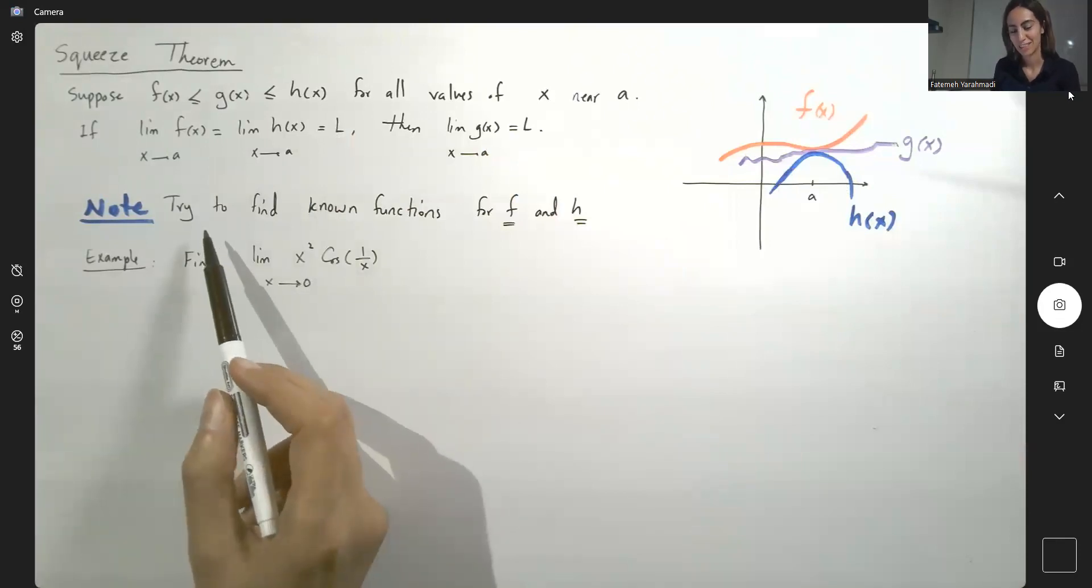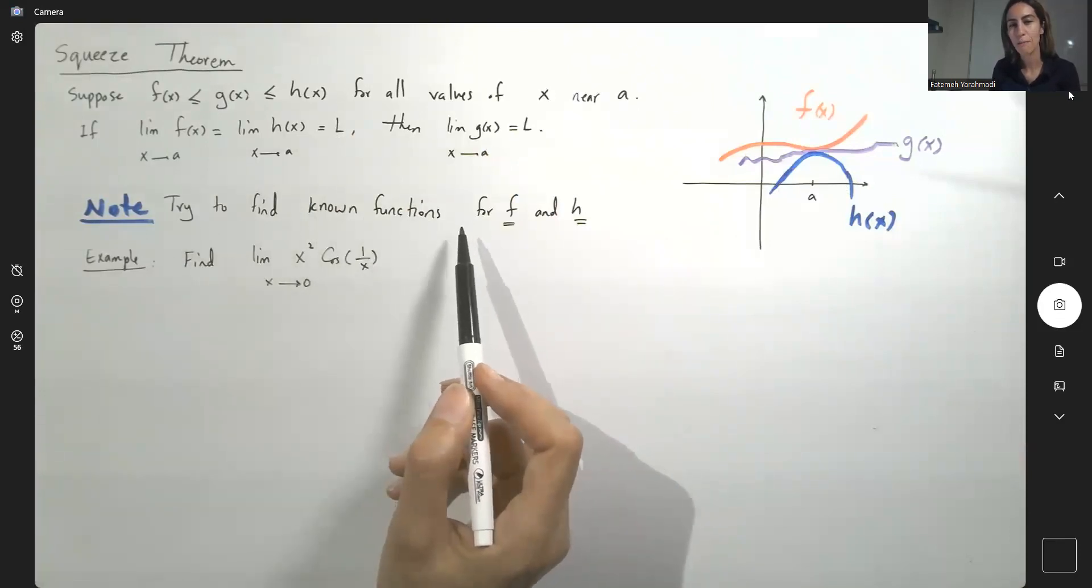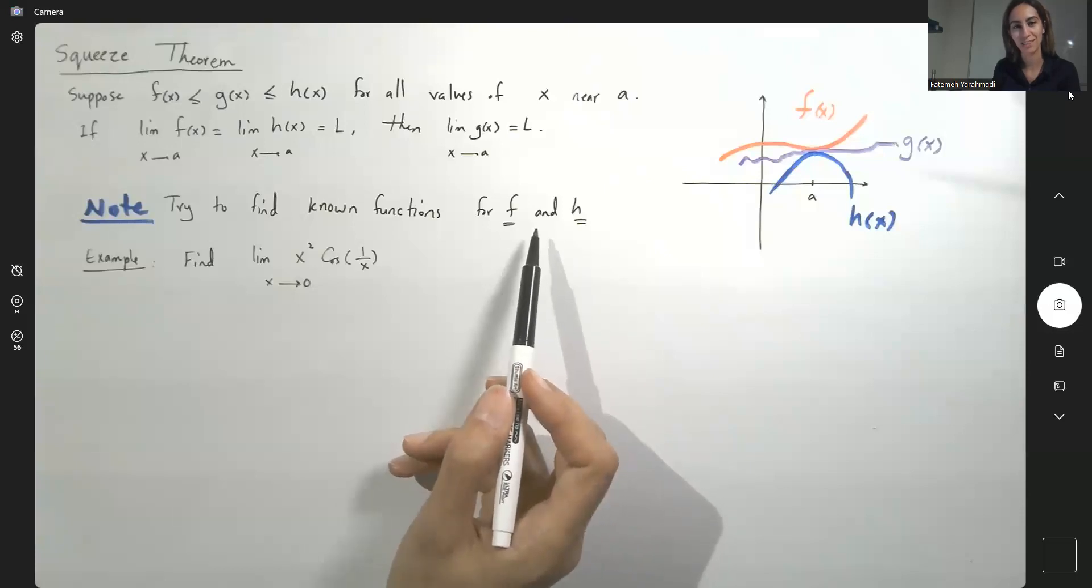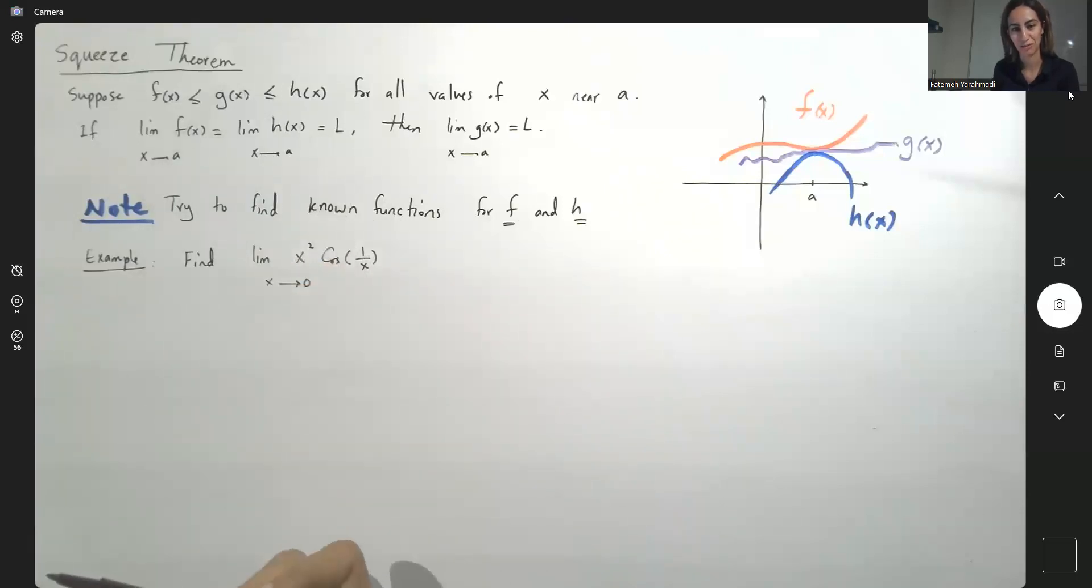Again, you need to find two known functions, parent functions hopefully, so you can squeeze this complicated function in between.